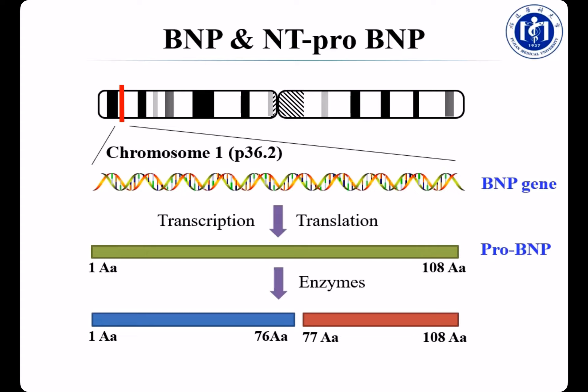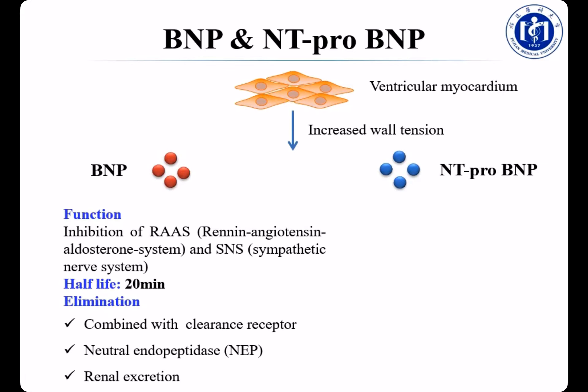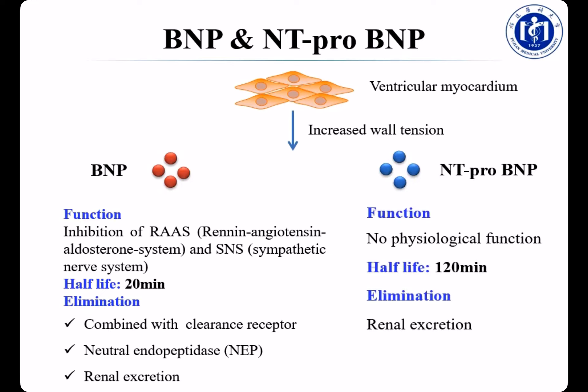Now let's look at the last important protein markers for heart failure: BNP and NT-proBNP. The BNP gene is located on chromosome 1. It is transcribed and translated to generate a 108-amino-acid protein called proBNP. An enzyme then cleaves proBNP into two parts: the N-terminal fragment (amino acids 1–76) called NT-proBNP, and the active fragment (amino acids 77–108) called BNP. Both BNP and NT-proBNP are secreted by ventricular myocardium when wall tension increases. BNP functions to inhibit the RAAS and SNS systems. The half-life of BNP is short — only 20 minutes — and it can be eliminated by three ways: clearance receptor, neutral endopeptidase, and renal excretion. No physiological function has been found for NT-proBNP. Its half-life is longer — about 120 minutes — and it can only be eliminated by renal excretion.